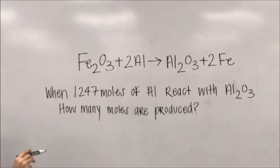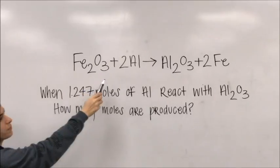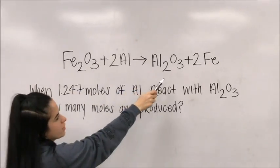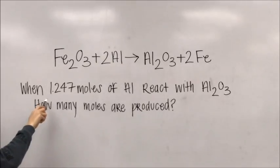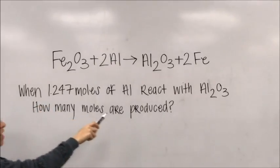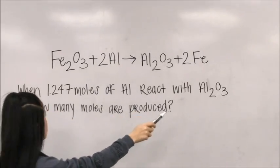For the chemical equation Fe2O3 plus 2Al to Al2O3 plus 2Fe, when you take 1.24 moles of Al reacting with Al2O3, how many moles are produced?